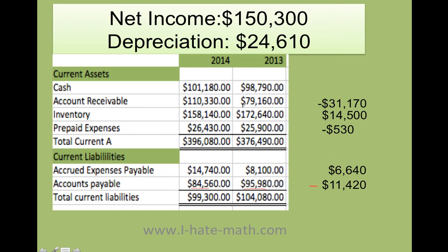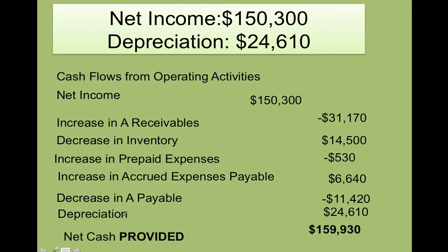Let's go over this really quick. Your accounts receivable increased — you subtract. Your inventory decreased — you add. Prepaid expenses went up — you subtract. Your payables went up — that means you're keeping the money in your pocket. Your accounts payable went down — that means you paid people, so you don't have that money anymore. Now that we have this, we can go ahead and build the cash flow from the operating activities.